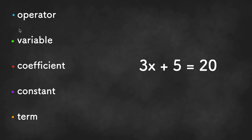An operator is any symbol that represents one of the operations. The four basic operators would be the plus sign, the minus sign, the multiplication symbol, and the division symbol. So in the given example, the operator would be the plus sign right over here.